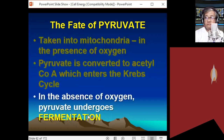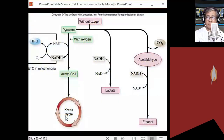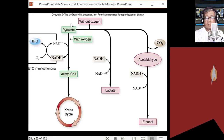That's why animals, including us, take in oxygen — because oxygen is used in this step. If there is no oxygen, pyruvic acid undergoes fermentation. There are two types of fermentation: animal cell fermentation and plant cell fermentation.